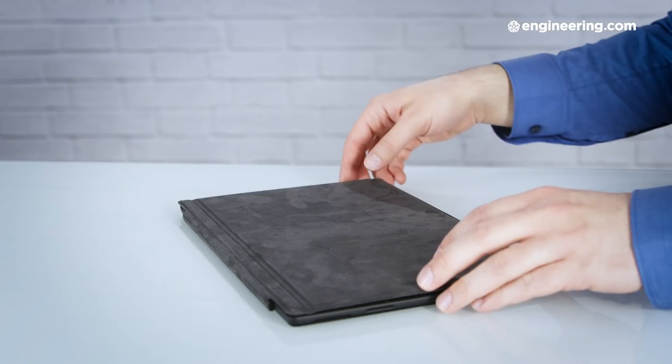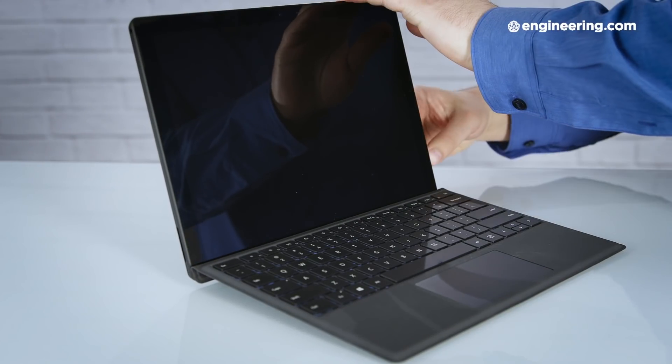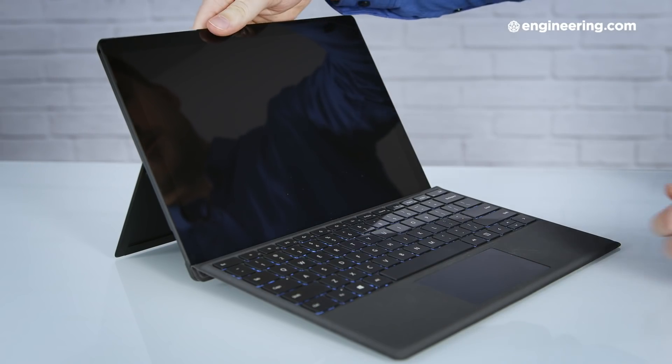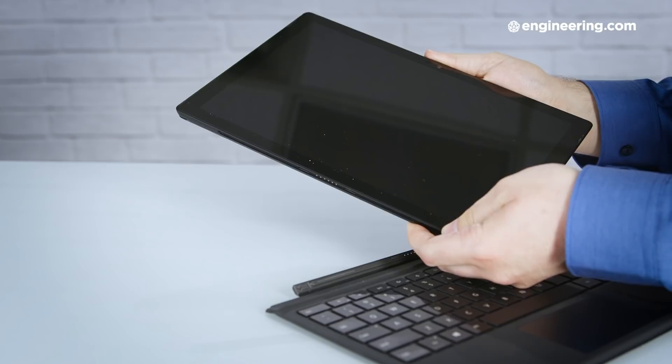The Surface Pro 6's main selling point is how well it straddles the line between laptop and tablet. If you've never seen a Surface Pro device before, it does this with a detachable keyboard. Take off this magnetic keyboard, and the SP6 is a slim, lightweight, and comfortable tablet. Snap the keyboard on again, and you've got a serviceable laptop running the full version of Windows 10.